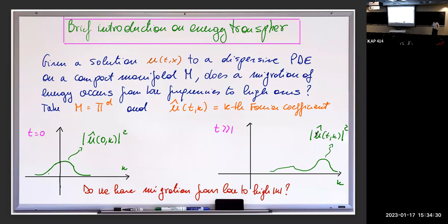We can look at the PDE both in physical space and in frequency space. In frequency space, for NLS or KdV, it happens to be an infinite-dimensional Hamiltonian system where the p and q — if you think about Hamiltonians — are the real and imaginary parts of the Fourier coefficient. The question we want to ask is: suppose at time zero I start with the Fourier coefficient's magnitude squared localized near small frequency. Can I find initial data such that later in time that bump moves toward higher frequency?